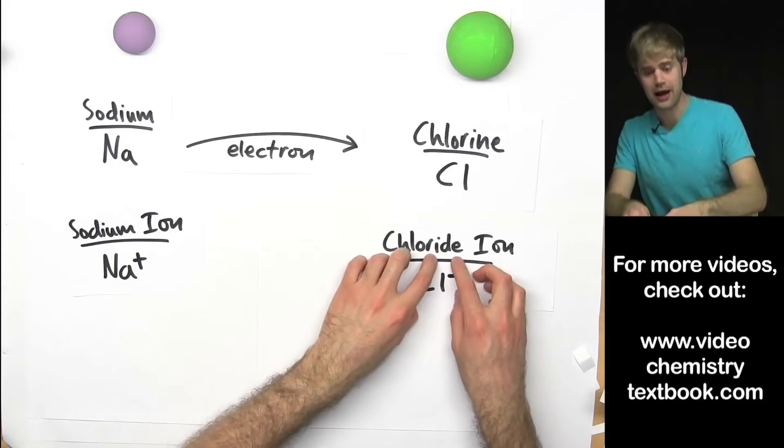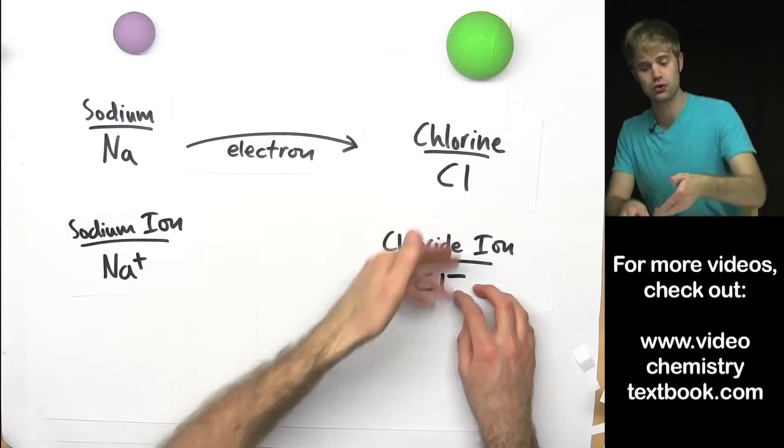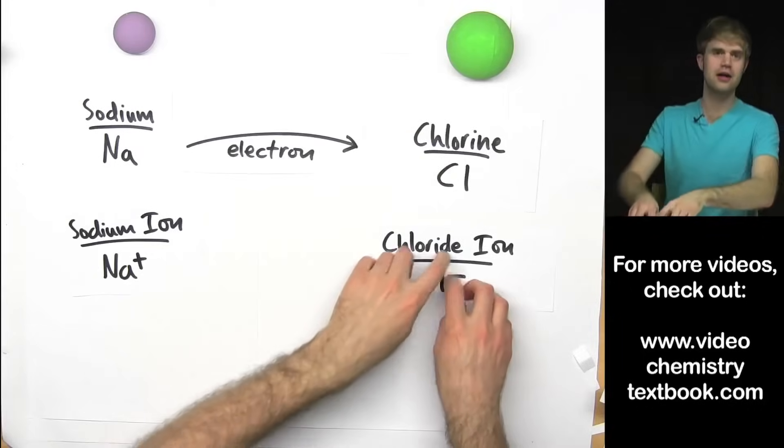Now we call it chloride because chloride is the negative version of chlorine. It becomes a negative ion and it becomes chloride.